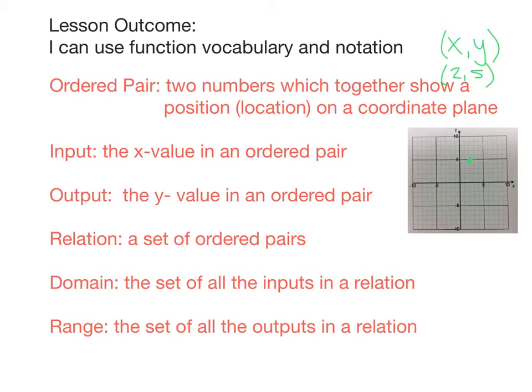So an ordered pair is an x and a y value written together to show a position or location on a coordinate plane. Now, the next two terms are input and output. And these are going to relate to this idea of a function as we get further along in the lesson.